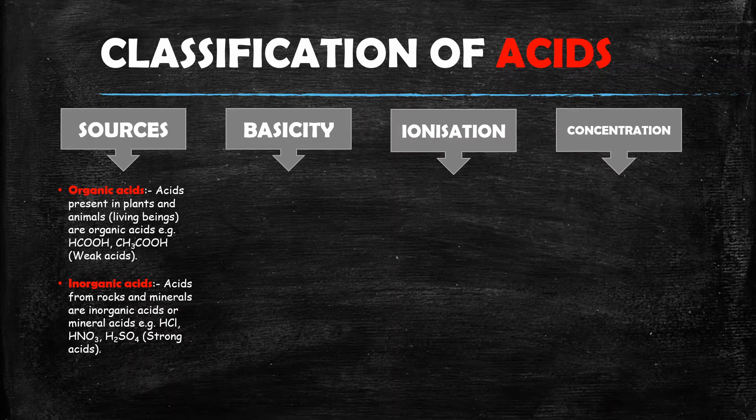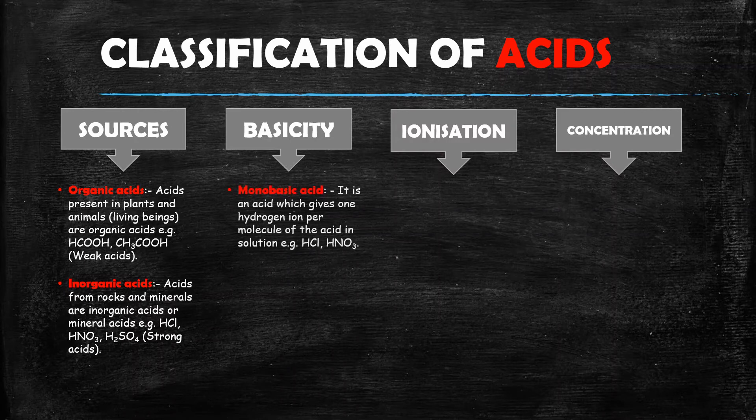The second type are mineral acids, which we find in rocks and minerals. Examples are HCl (hydrochloric acid), HNO3 (nitric acid), and H2SO4 (sulfuric acid). Based on basicity, we have monobasic acids, which have one replaceable hydrogen atom per molecule.